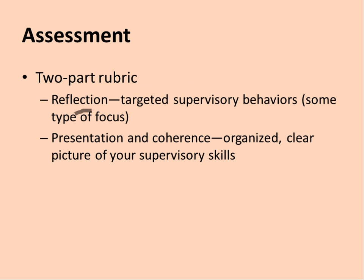There's a two-part rubric. To score well, you need to show that you've been very reflective, and again, identifying something specific to focus on as part of that reflection — such as how you conference with teachers or how you provide feedback. The second part of the rubric requires that the submission be organized and give a clear picture of what you did, what you thought about it, what you learned, what you did right, what you might do differently, and what you want to do the same.